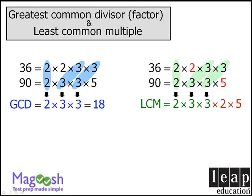So our lowest common multiple will be the product of all of these numbers and this equals 180. So there you have it.